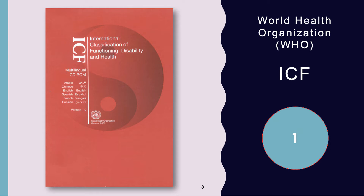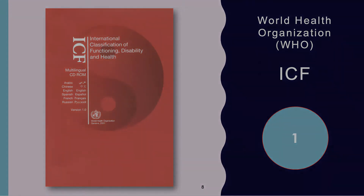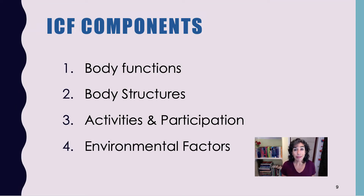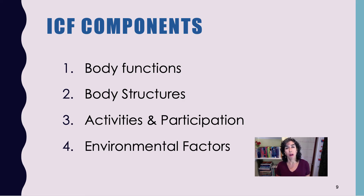When you browse the ICF, there is indeed a coding system. That can be important for diagnosis, it can also be important for documentation, and in some cases for submitting to payer sources. Now we're going to look at the ICF components. The first component is body functions — the physiological functions of the body systems, how our systems work. They are coded from no impairment to complete impairment, from everything working just fine to a complete breakdown of a body system.